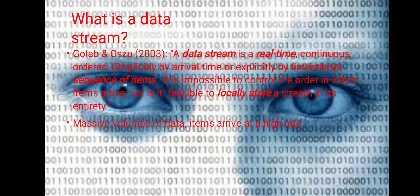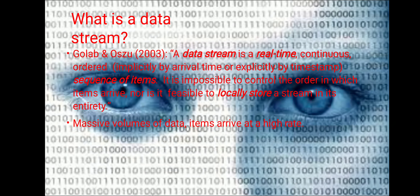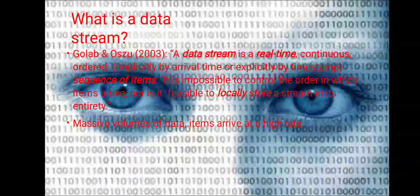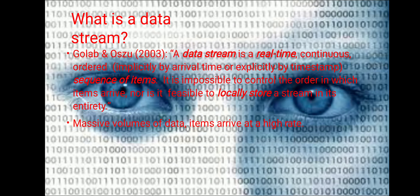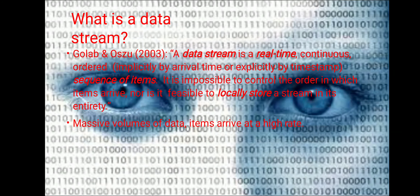What is a data stream? A data stream is real-time and continuous, unstructured by certain arrival time, with a timestamp — it is a sequence of items or elements. It is impossible to control the order in which data arrives, nor is it feasible to locally store all the data in its entirety. A massive volume of data arriving at a higher rate is called a data stream.